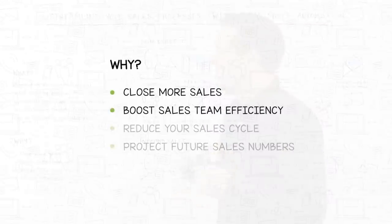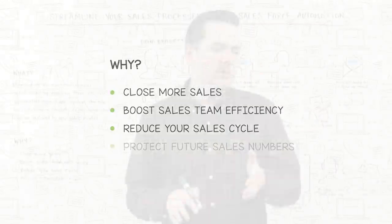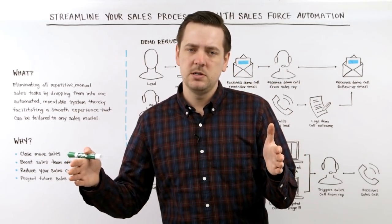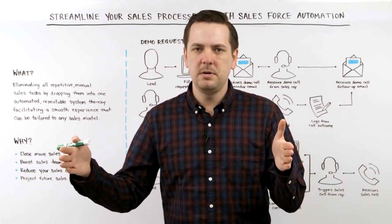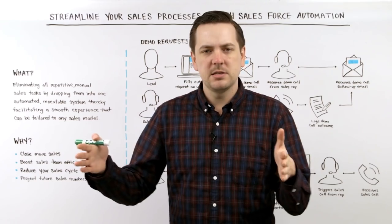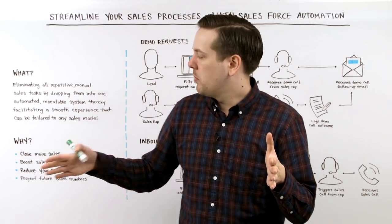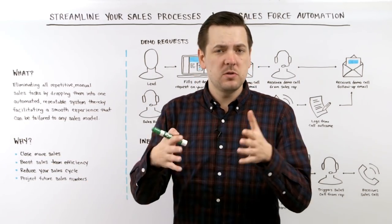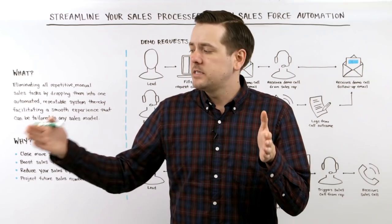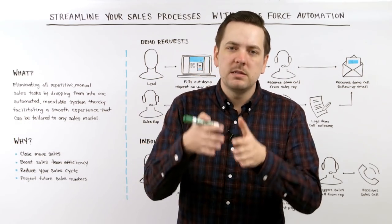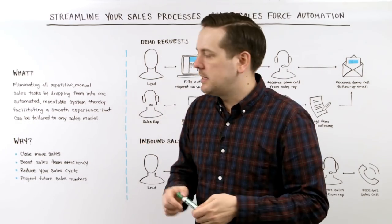The third reason why is to reduce your sales cycle. What we're talking about when we say sales cycle is the time between somebody becoming a lead and when they make a purchase — sort of between A and B. If that sales process currently takes nine months, what we're hoping to do by automating and streamlining it is cutting that nine months into four months or into three months — you get the idea.